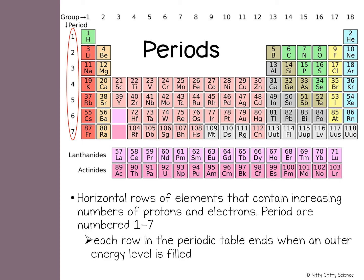The horizontal rows of elements are called periods. There are seven periods. In each row, the elements increase by one proton and one electron as you go from left to right, and it ends when the outer energy level is filled.